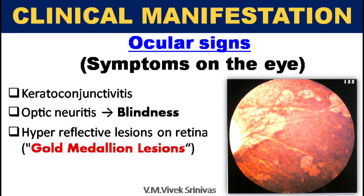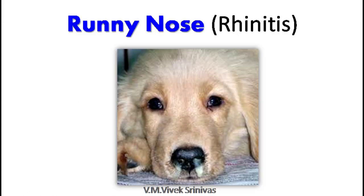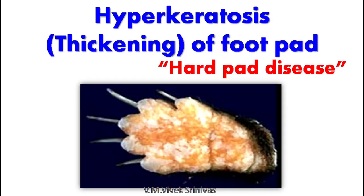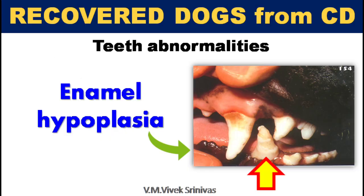The picture on the right shows hyperreflective lesions on the retina, called gold medallion lesions. Pictures also depict runny nose in a puppy due to rhinitis, purulent eye discharge, and thickening of the foot pad due to hyperkeratosis — which is why this infection has the nickname hard pad disease. Recovered dogs from canine distemper infection will have teeth abnormalities like enamel hypoplasia.